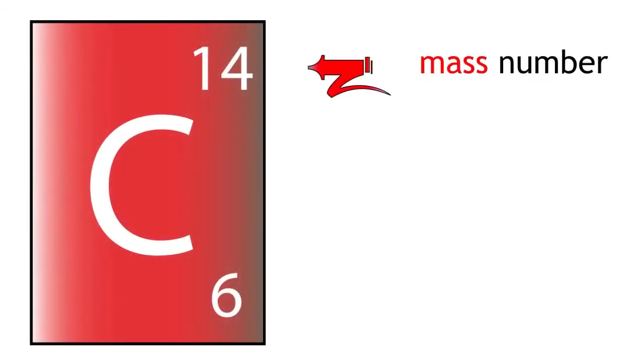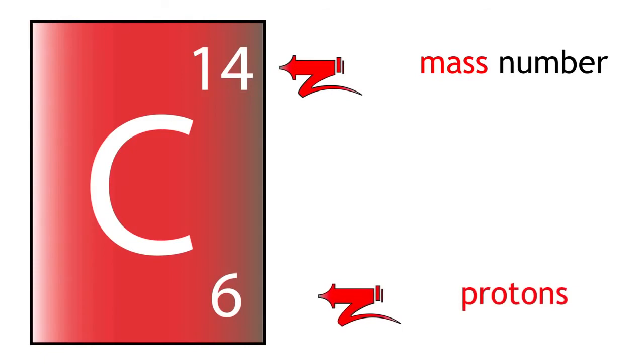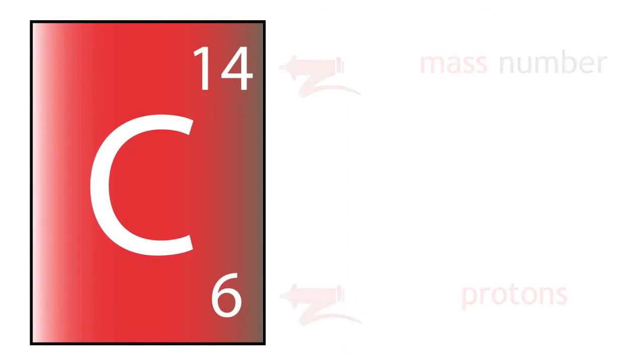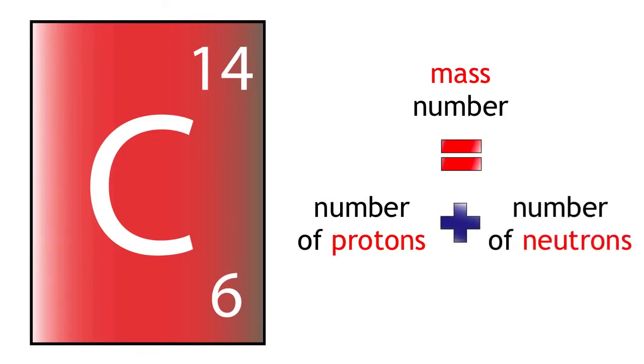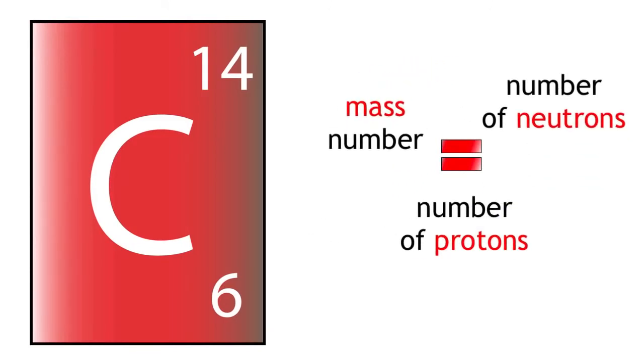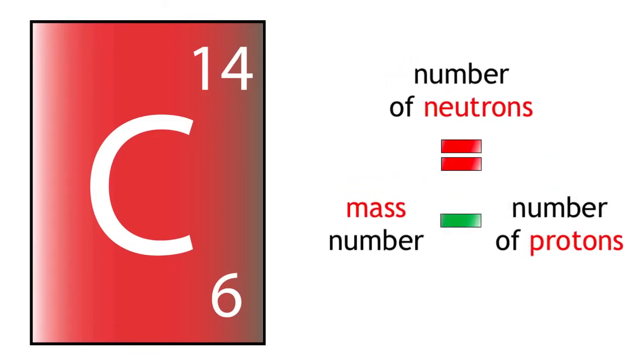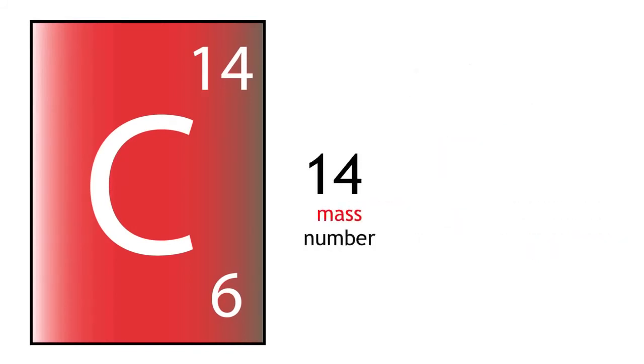Carbon-14 has a mass of 14 but it still only has 6 protons. Mass number equals protons plus neutrons. Rearrange. Neutrons equals mass number minus protons. 14 minus 6 equals 8. Therefore, carbon-14 has 8 neutrons.